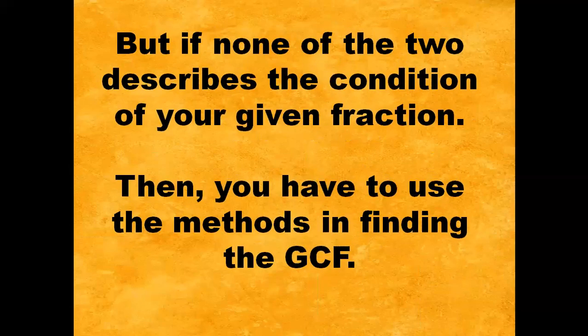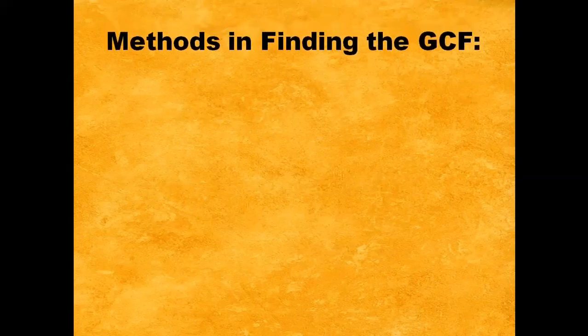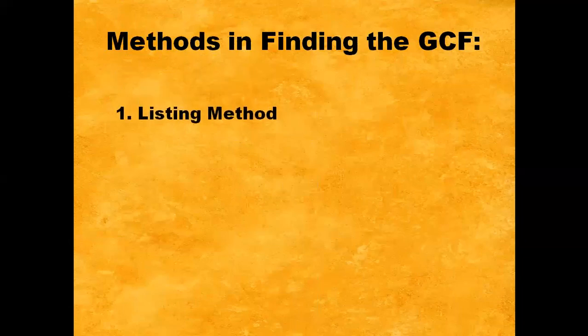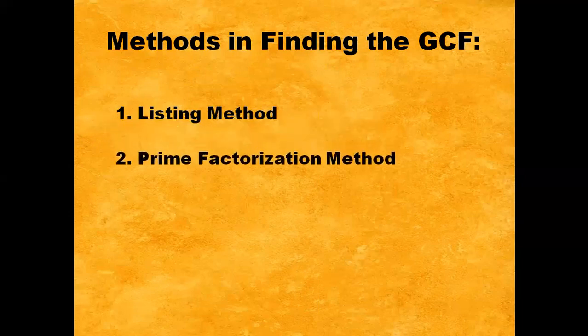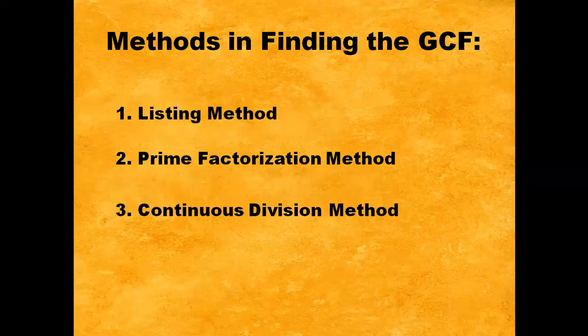But if none of the two describes the condition of your given fraction, then you have to use the methods in finding the GCF or the Greatest Common Factor. The three methods are: first, the listing method; second, the prime factorization method; and third, the continuous division method.